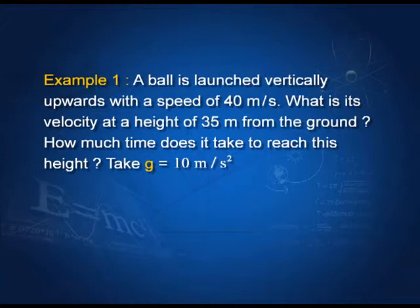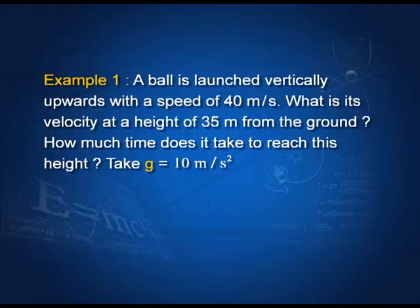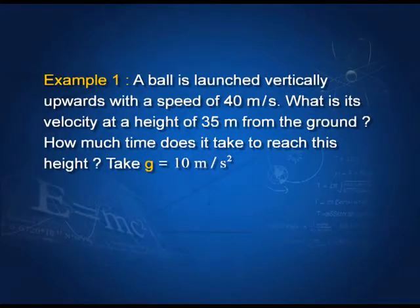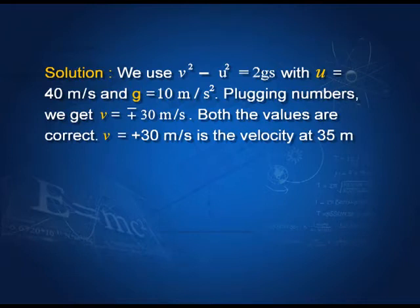Example 1: A ball is launched vertically upwards with a speed of 40 m/s. What is its velocity at a height of 35 meters from the ground? The initial speed is 40 m/s. We use v² − u² = 2gs, with u and g given. Plugging in the numbers, we get v = ±30 m/s.